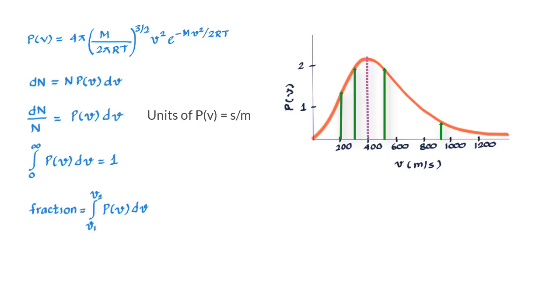Therefore the peak of the curve shows most probable speed and we call it VMP, which means you have most number of molecules in the box moving around at that speed at a given temperature for which the curve has been made.